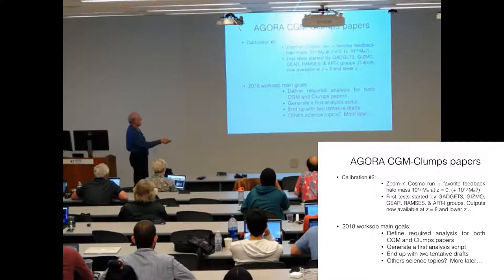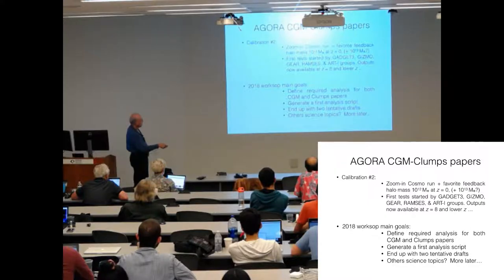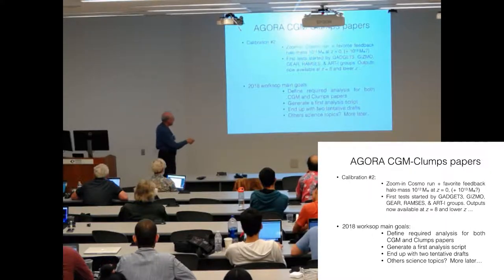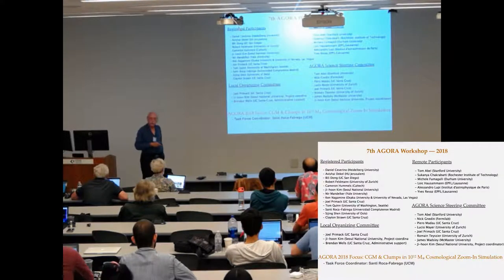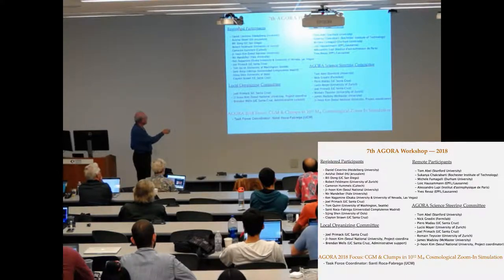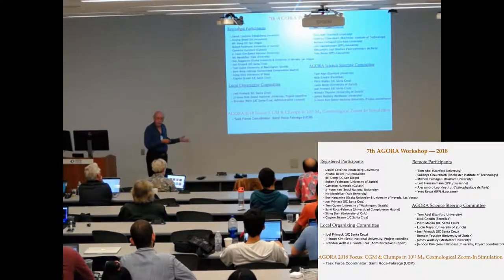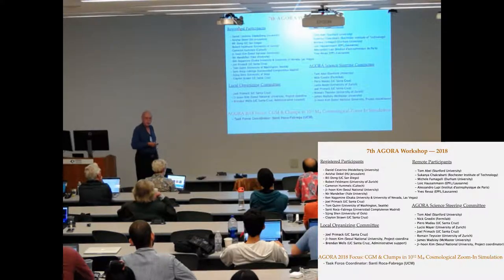Then the key thing is to start the cosmological run, and that's now been started for four codes. And we actually have outputs at redshift eight, and in some cases lower redshifts. Very likely it will be necessary to run the code again. But the plan is that once we're basically running them the way we like, we'll store lots of time steps, and we'll run all the codes down through redshift zero. So we want to define an analysis for the circumgalactic medium and clumps papers, generate a first analysis script, and we are expecting that we'll end up writing papers on both the circumgalactic medium and the clumps. And other science topics are certainly welcome. And people who are working with other codes are welcome to join.